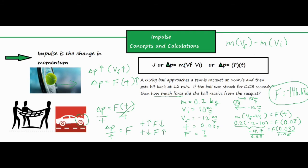I went ahead and set up and solved that impulse problem. First, you want to make sure you set up a picture anytime you can, even if it's a very basic picture. The main reason for that is to notice that the ball goes back the other direction when it gets hit, therefore having a negative sign in front of the 12 meters per second to show the difference in direction.